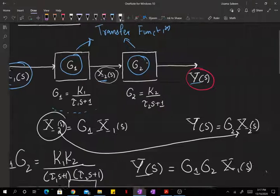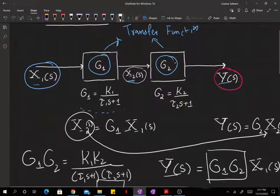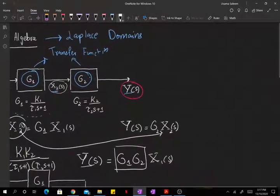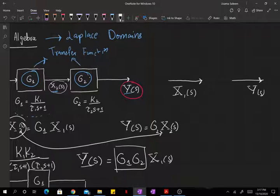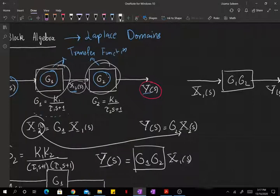Now, once I know this transfer function here, I can redraw this block diagram by replacing g1 and g2, I can make it cleaner. I just want the relationship between x and y. So I can just replace these two blocks by g1 times g2. There you go, much cleaner. So every time you have blocks in series, you just multiply them.